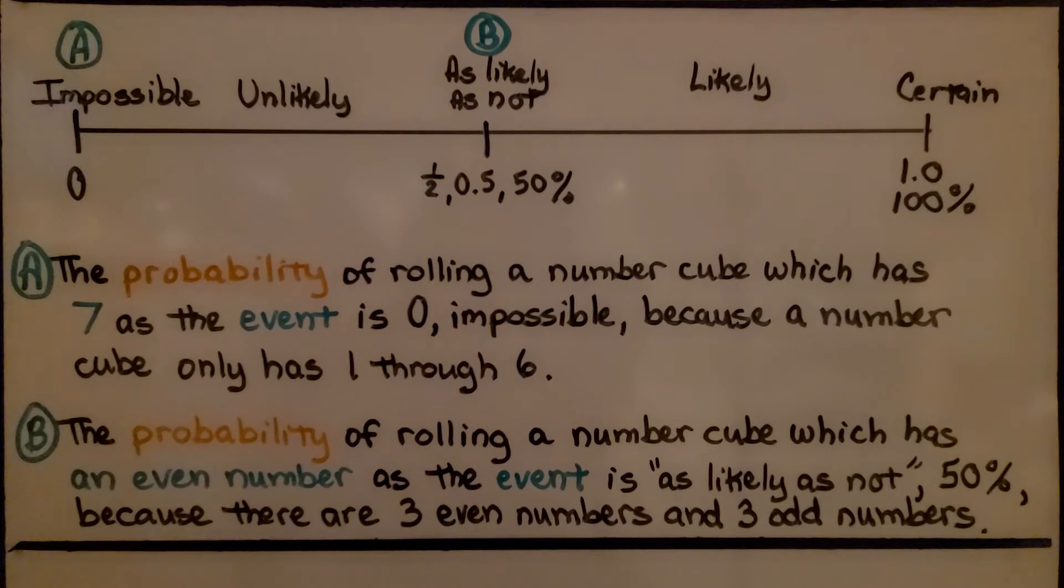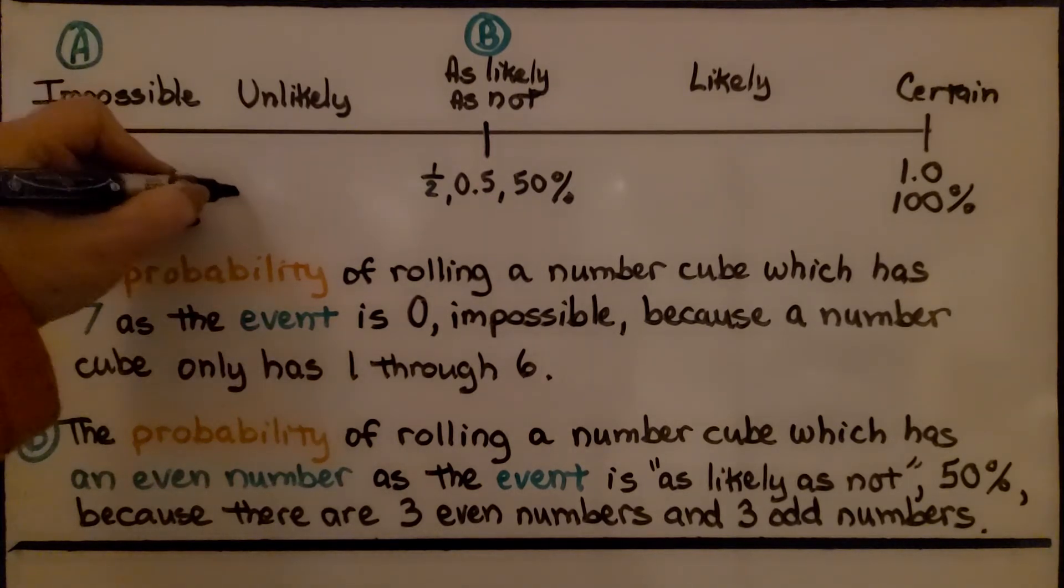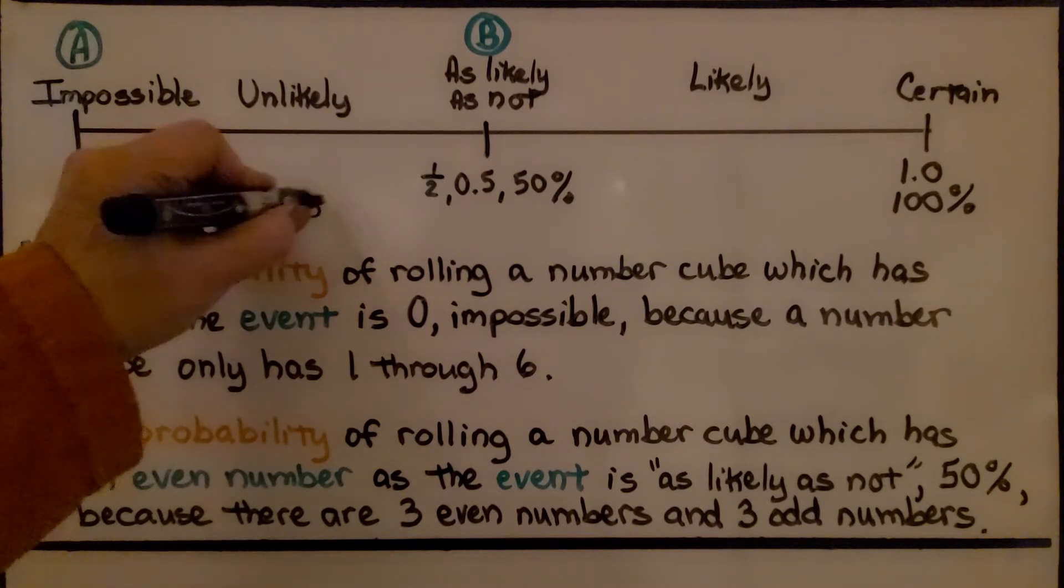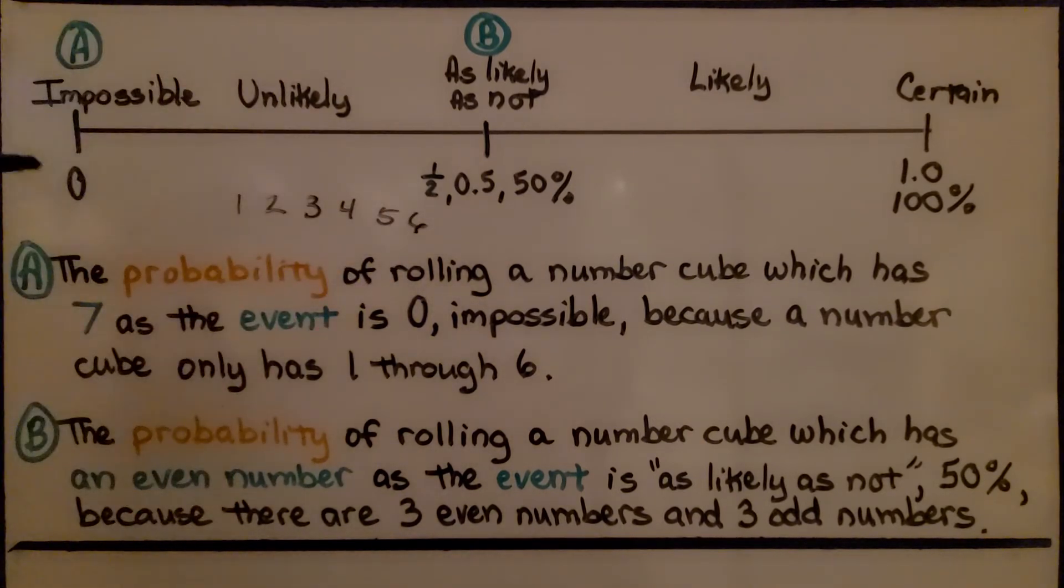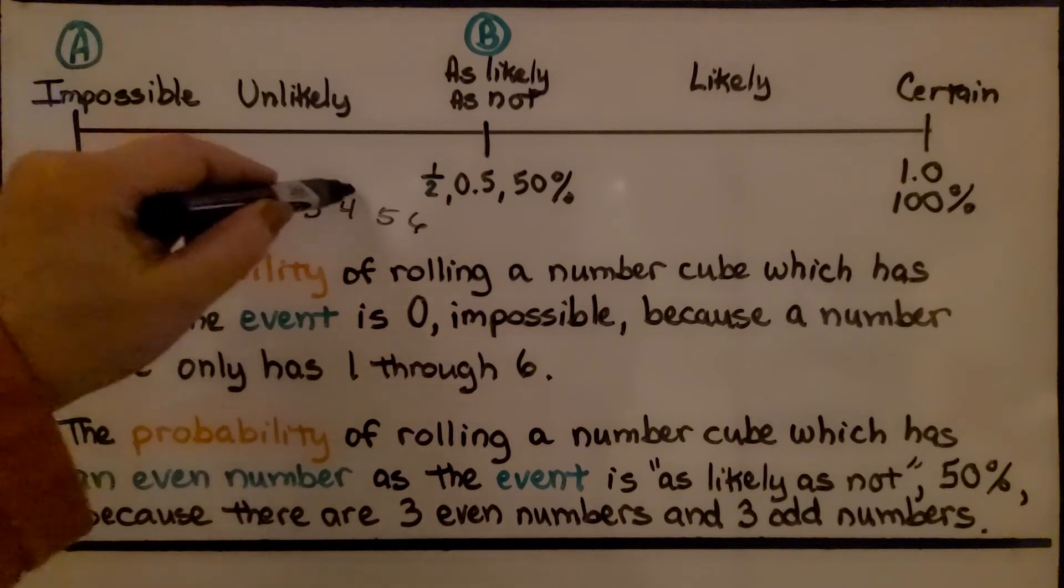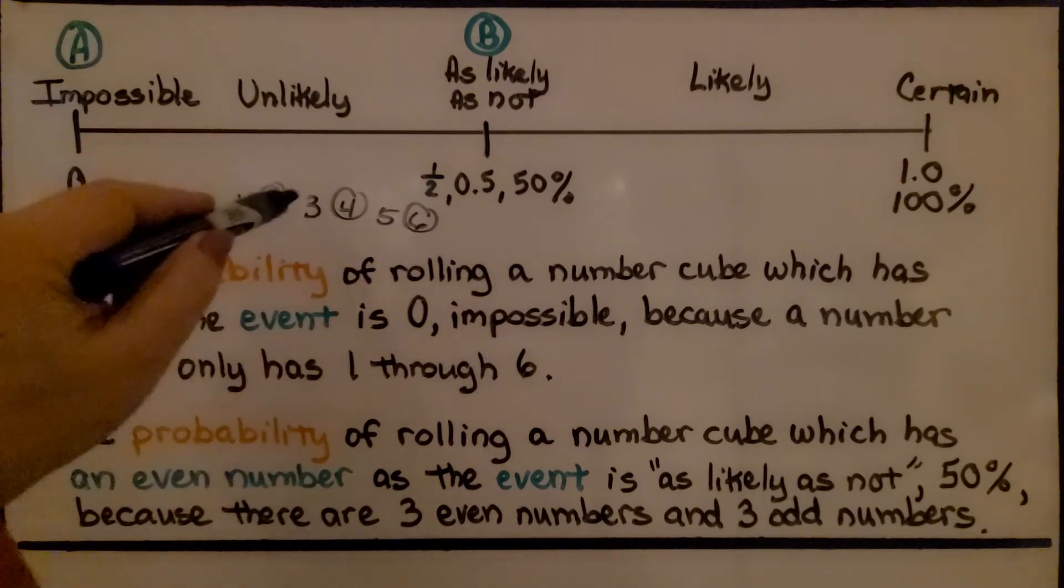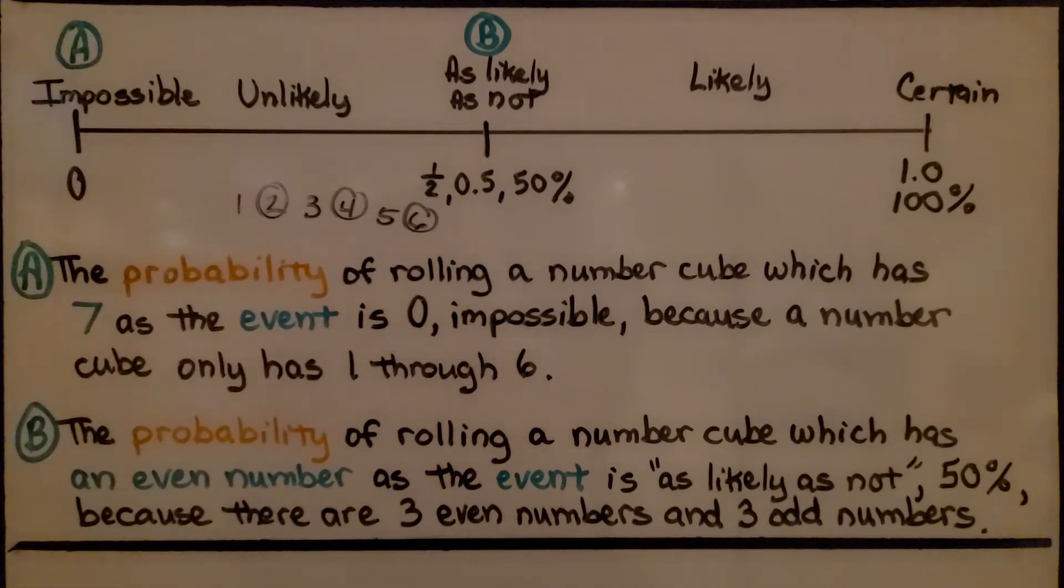For event B, the probability of rolling a number cube which has an even number as the event is as likely as not. It's 50% because there are three even numbers and three odd numbers. On a number cube, we have one, two, three, four, five, and six. How many even numbers are there? Two, four, six. And there's three odd numbers. It's 50-50. We have a 50% chance of rolling an even number.